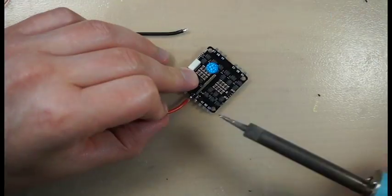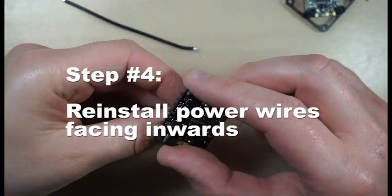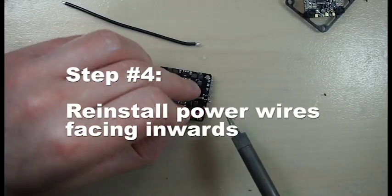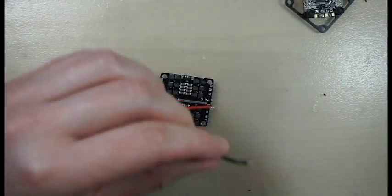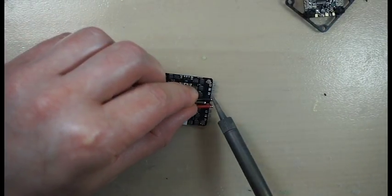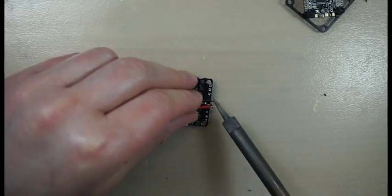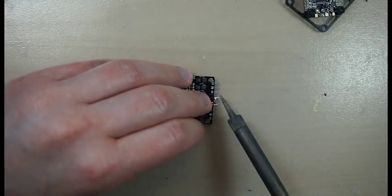Now we have to remove speed controller power cables and solder them to face inside. The main reason is because in most cases on FlexRC frames speed controller is installed at 45 degrees and we don't want battery connector to be cut by propellers in this case.